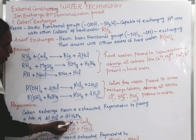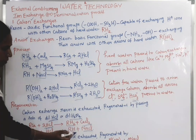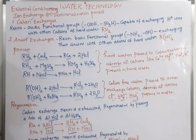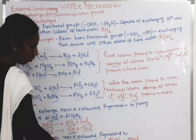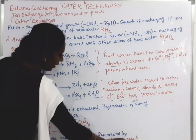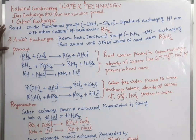The regeneration reaction for the cation exchange resin: R·Ca plus HCl gives RH2 plus NaCl — the cation exchange resin is regenerated. Similarly, the anion exchange resin is regenerated by passing sodium hydroxide: R·Cl2 plus NaOH gives R(OH)2 plus 2NaCl. That is all about the external conditioning — the ion exchange or demineralization process — covering the cation exchanger, anion exchanger, and the regeneration processes.